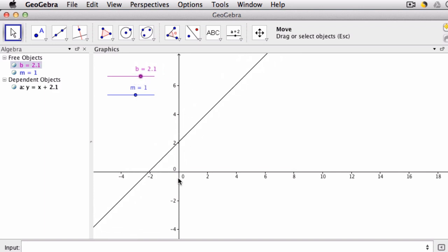Other ideas I've seen: you can create a line segment from maybe the origin to the line, so that as you move it up and down, you can see that the height is actually changing.